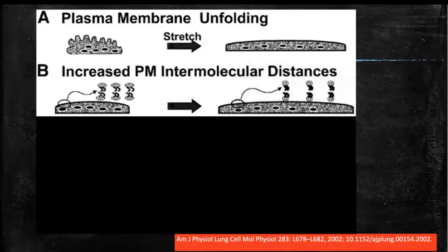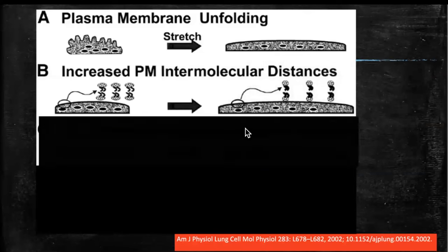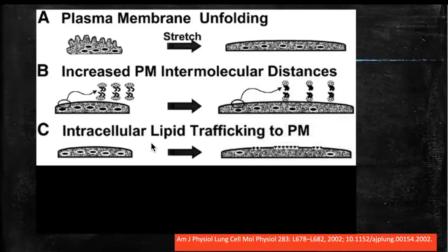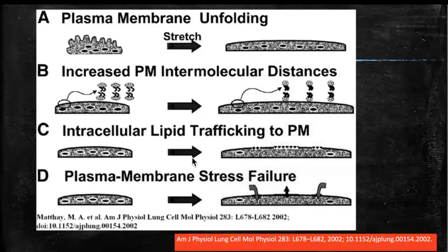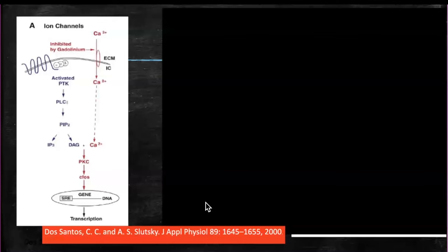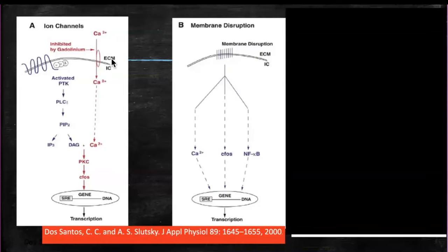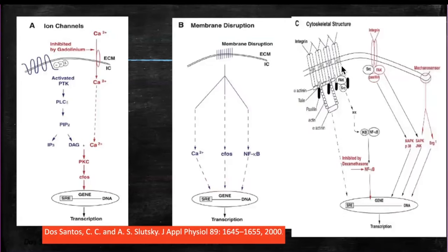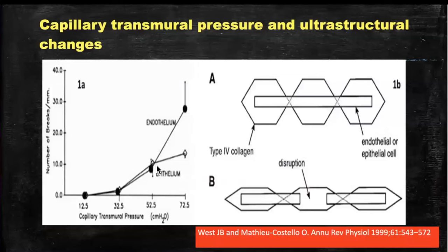This leads to plasma membrane unfolding, increased intermolecular distancing, intracellular liquid trafficking to the plasma membrane, and plasma membrane stress failure. Different mechanisms include damage to calcium channels on alveolar and endothelial cell membranes, cell membrane disruption, and disruption of antigen molecules leading to cytokine effects on the cytoskeleton of the alveolo-capillary membrane. Injury to the endothelium precedes injury to the epithelium.